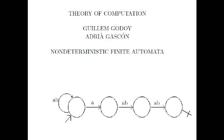We present in this chapter an extension of deterministic finite automata: non-deterministic finite automata. This model is a little bit weird at the beginning since the execution of the machine on an input word is not uniquely determined. This kind of machine has several execution paths for a given word, that can be chosen in a non-deterministic manner.